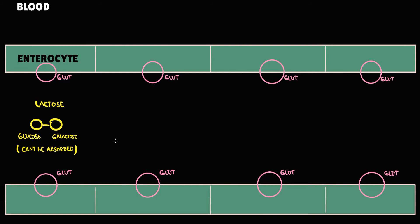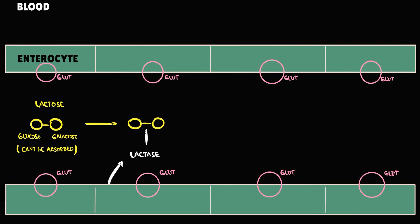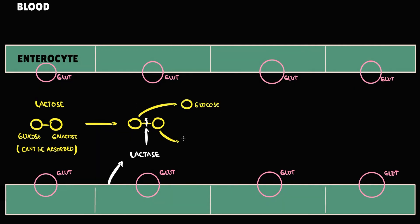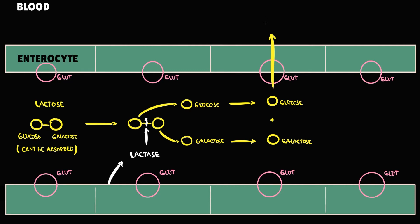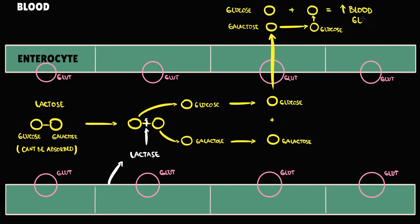Enterocytes have only GLUT transporters that can transport monosaccharides only. So because lactose is a disaccharide, it must initially be degraded to monosaccharides. This degradation is provided by the specific enzyme called lactase, which is located on the brush border of enterocytes. Lactase degrades lactose to glucose and galactose, and then both are absorbed through GLUT transporters into the blood. In the blood, galactose is converted into glucose, and together this causes an elevation of blood glucose level.